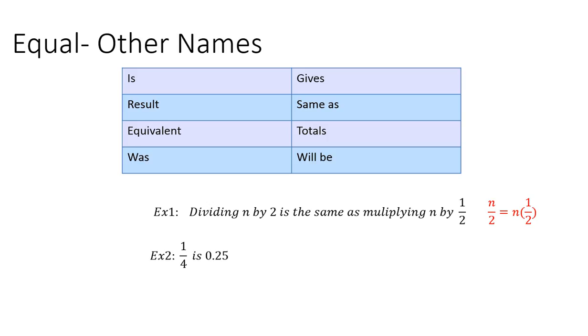Example 2, 1 fourth is 0.25, so that's saying that those are equal. And then example 3, the number of B books and N notebooks totals 5. So what that's saying is B plus N equals 5.